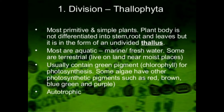Discussing the photosynthesis system: Thallophyta usually contain the green pigment chlorophyll for photosynthesis. Some algae also have other photosynthetic pigments such as red, brown, blue-green, and purple.